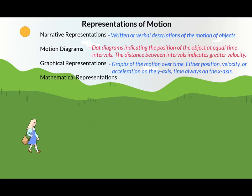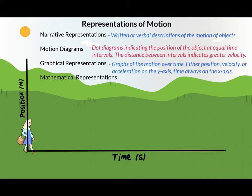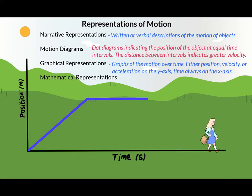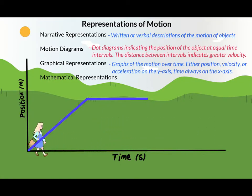Let's see how this looks on a position-time graph. The origin of the axes represents where Amber began her motion. The y-axis is position measured in meters and the x-axis is time measured in seconds. When Amber began her motion she walked at constant speed, meaning her position changed in regular intervals, so we see the line of her motion as a straight sloped line indicating a constant velocity. Then she sat down — not moving for a time — so the line shows a constant position as the time interval continues to change.